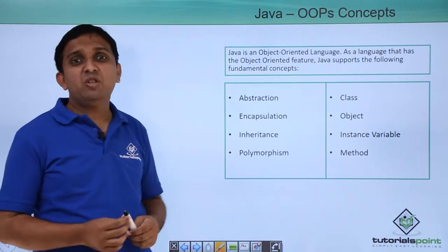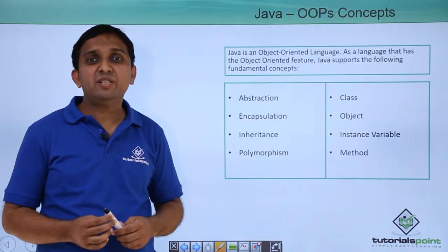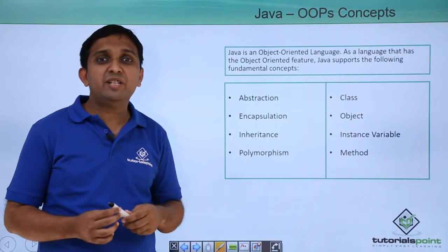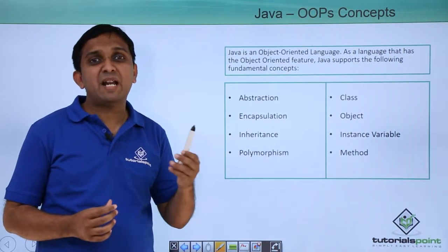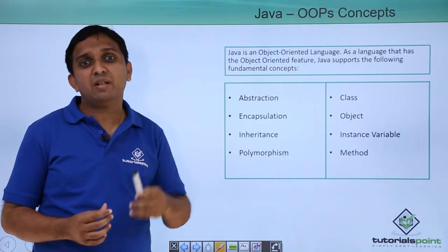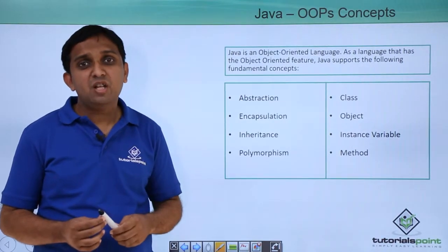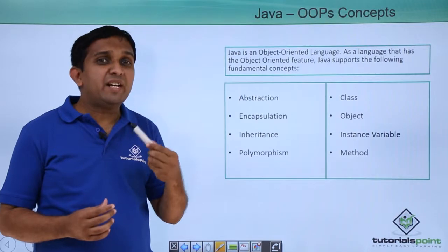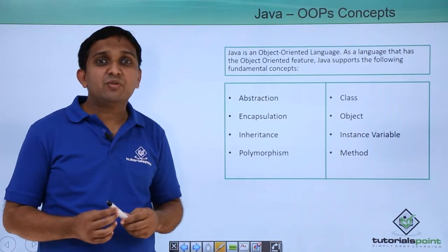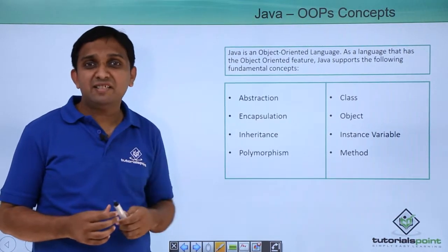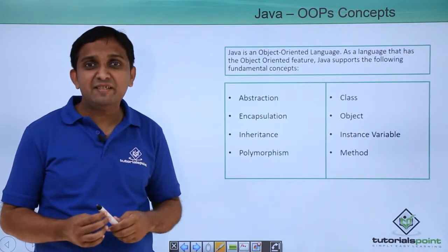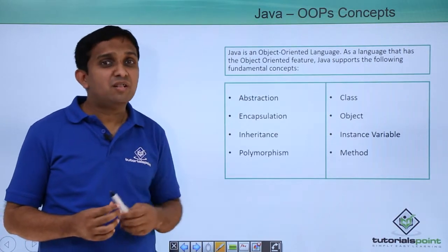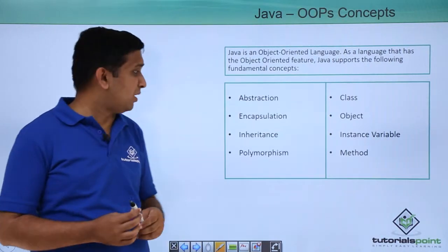Then Encapsulation — encapsulation refers to data hiding. Encapsulation is achieved using keywords like private and protected in Java. If I want to protect instance variables from other classes, I will declare them as private. That is how encapsulation is done in Java.